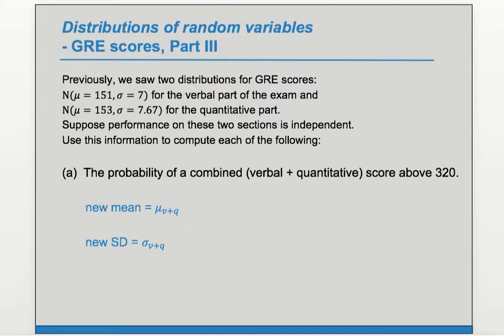The mean of a sum should just be the sum of the means. So if we want the mean of the total score we should be able to just add the means of the two sections. So we can add the mean for the verbal section plus the mean of the quantitative section, and that's going to be 151 plus 153 is 304.